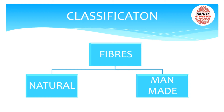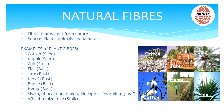Now, the classification of fibers: fibers are of two types — natural and man-made. Natural fibers are further divided into plant, animal, and mineral fibers, whereas man-made fibers are further divided into regenerated, artificial, and others.